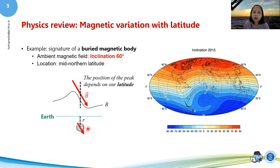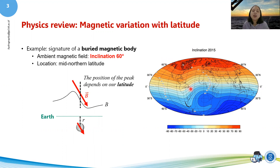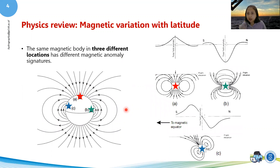For example, there is a buried magnetic body at an inclination of 60 degrees. The signature of that body depends on where it is located — that is what we already discussed in the physics class: the same magnetic body in three different locations will produce three different signals.